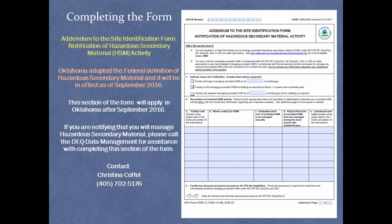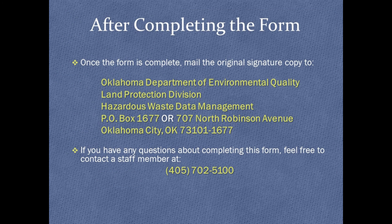Addendum to the Site Identification Form, Notification of Hazardous Secondary Material Activity. This section of the form will apply in Oklahoma after September 2016. If you are notifying that you will manage hazardous secondary material, please call ODEQ Data Management at 405-702-5176. Once the form is complete, mail the original signature copy to: Oklahoma Department of Environmental Quality, Land Protection Division, Hazardous Waste Data Management, PO Box 1677, Oklahoma City, OK 73101-1677. If you have any questions, staff members can be reached at 405-702-5100, or contact Christina Koffel directly at 405-702-5176. Thank you.